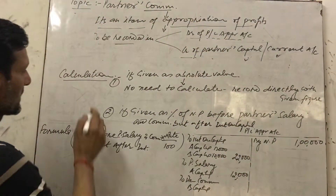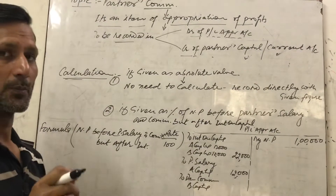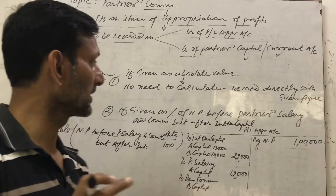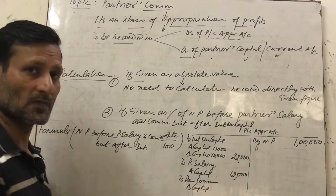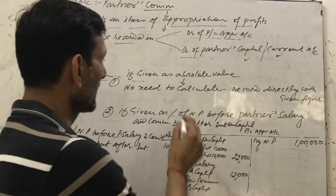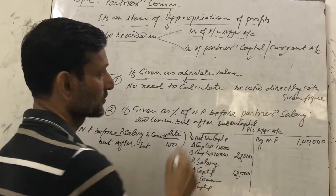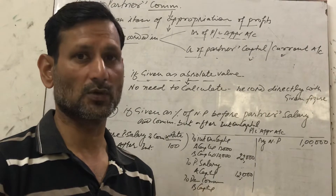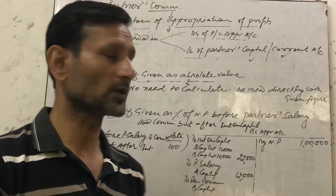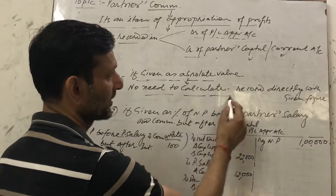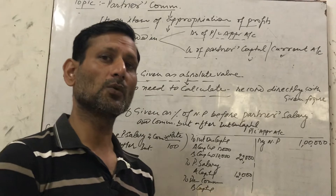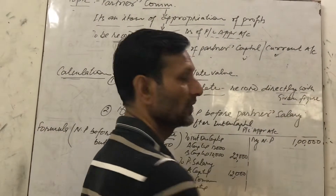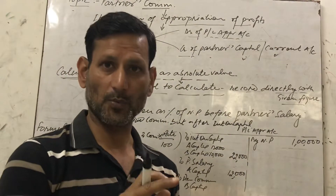Next topic is calculation — how will we calculate Partners Commission? First case: if Partners Commission is given as an absolute value, like 'Partner A is entitled to get commission ₹5,000,' then there is no need to calculate the amount, because the commission amount is already given in the question. We can directly record it with the given figure in the debit of Profit and Loss Appropriation Account.